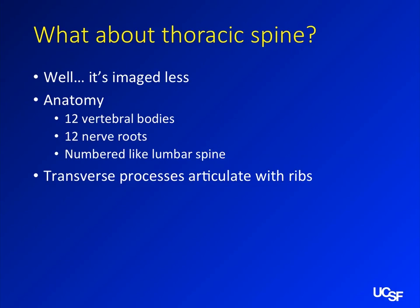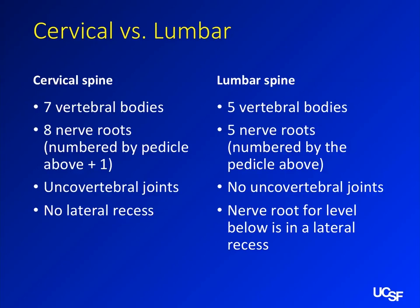The thoracic spine is imaged less — there's less degenerative disease there, less of everything. You have 12 vertebral bodies, 12 nerve roots, 12 ribs, and the transverse processes articulate with the ribs. An important point: nerve root numbering is different in the cervical spine because there are eight cervical nerve roots. C1 comes out below the occiput, so they're numbered one higher — the nerve root exiting below C7 is the C8 nerve root. Just be careful about your numbering and be aware there is a difference.